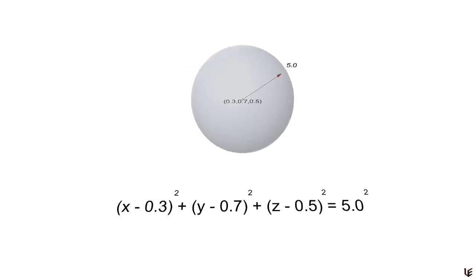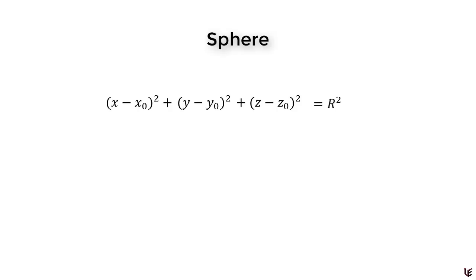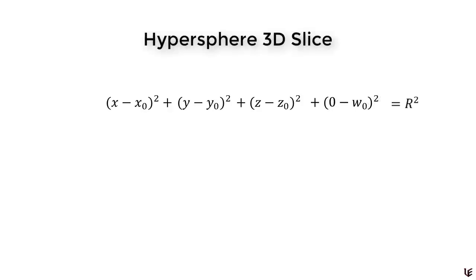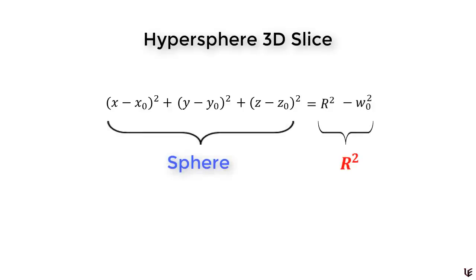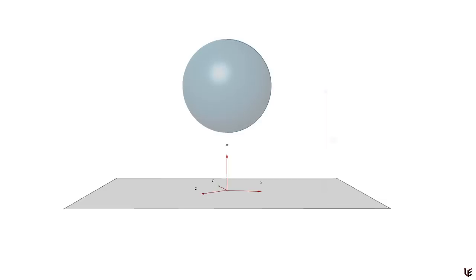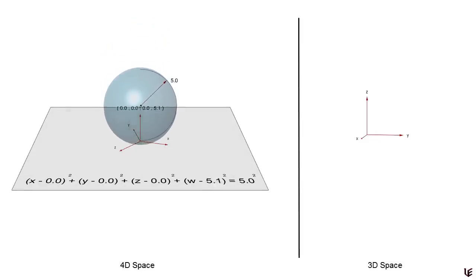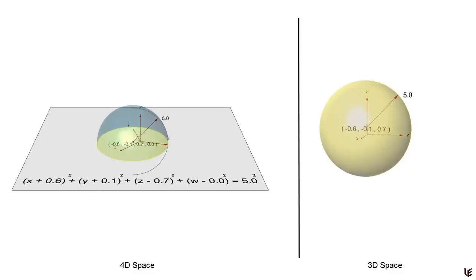In four dimensions it's really not much different. By adding a w-squared term to our equation we can transform our sphere into a four-dimensional hypersphere. We can use this equation to determine what a 3D slice would look like if this hypersphere were to pass through our world. Since everything we see is on the w equals zero hyperplane, substituting w equals zero simplifies to the equation for a sphere. So math tells us that 3D slices of a hypersphere are spheres, and their size depends on the hyperplane's w-naught coordinate in 4D space.